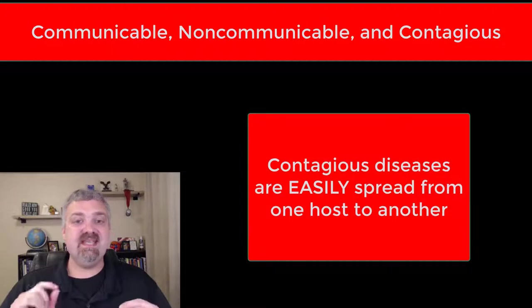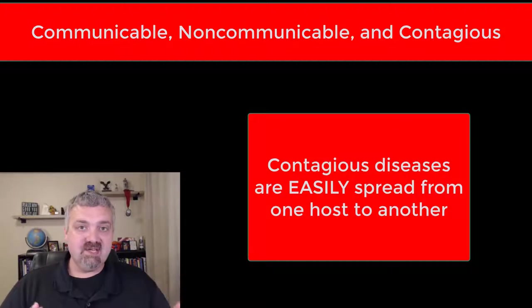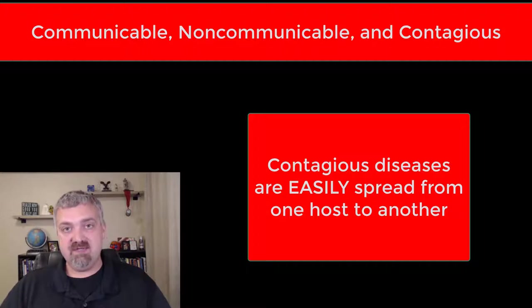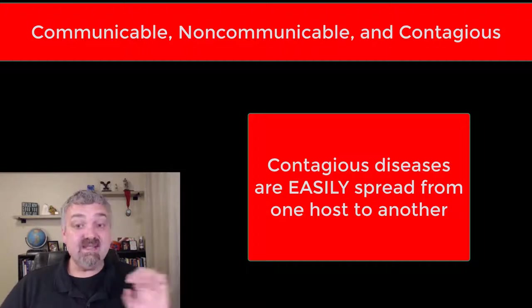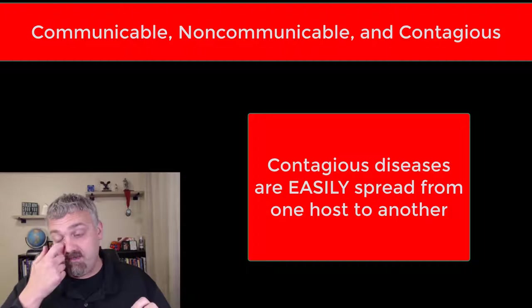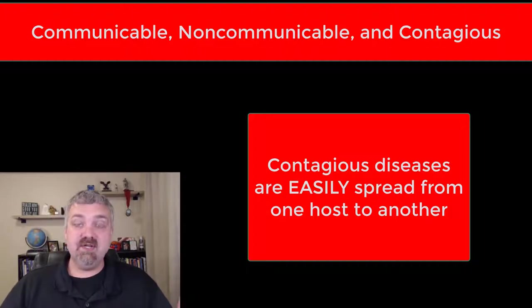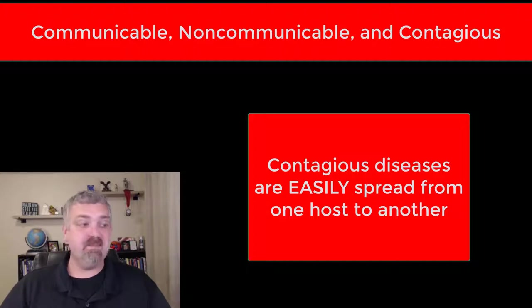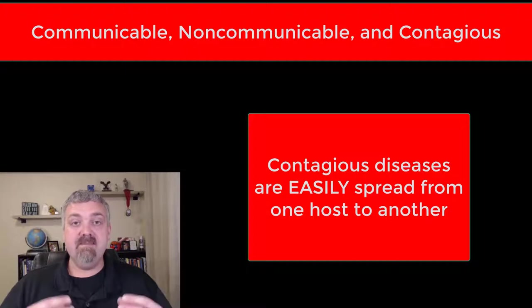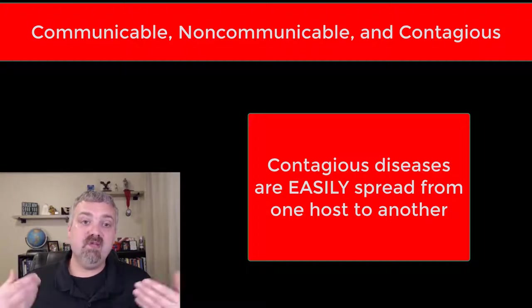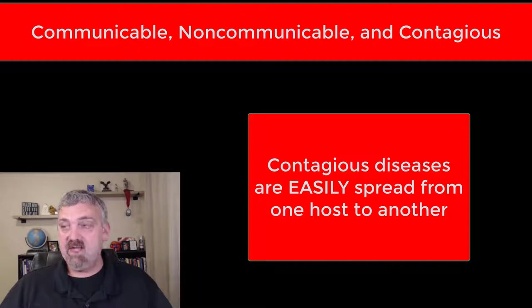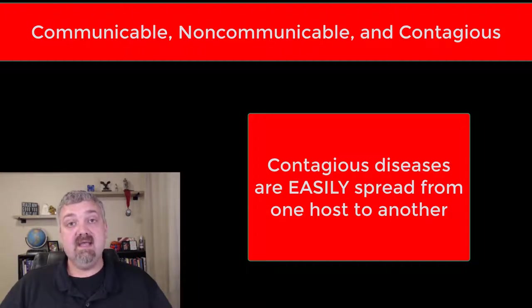Contagious diseases — the key word here is 'easily.' A contagious disease is a type of communicable disease that is spread easily and quickly, rapidly from one host to another. The flu is a good example, but the best example is measles. I've seen data showing that if someone was in a room that you enter four hours after someone with measles was there, and no one is vaccinated or has immunity, you might have a 90-plus percent chance of actually getting that infection. So that would be an example of a contagious disease.